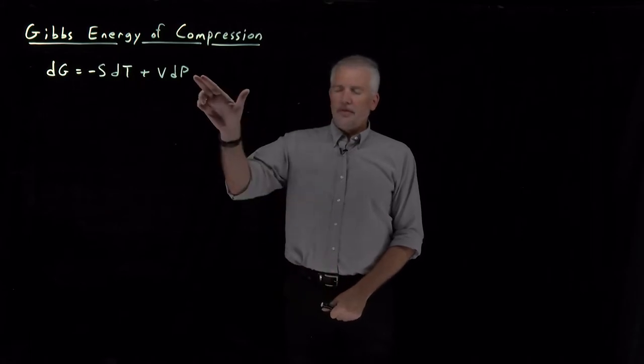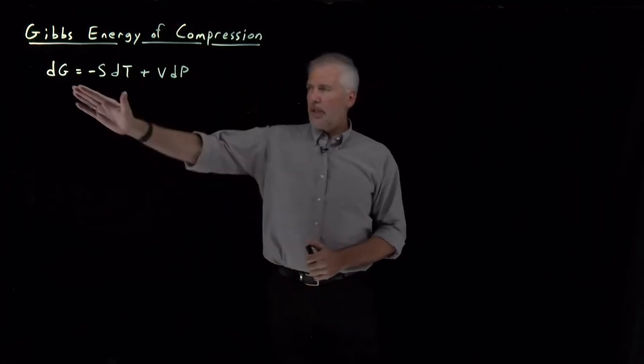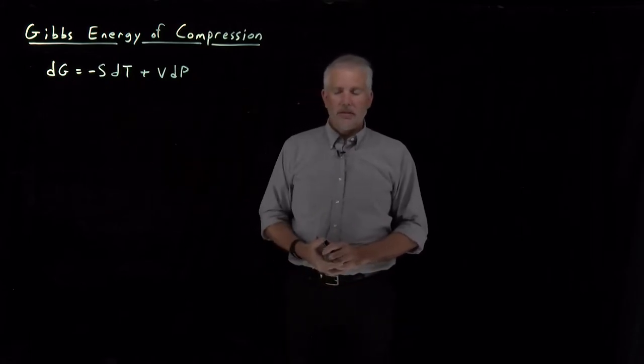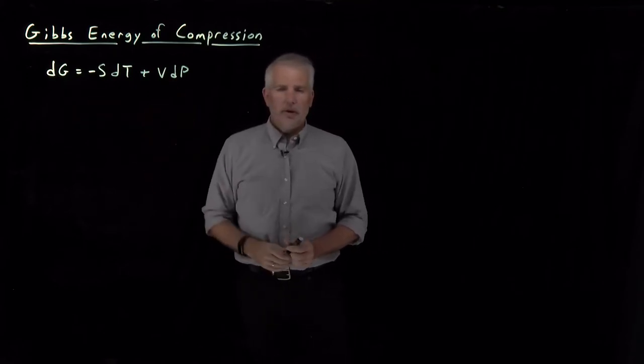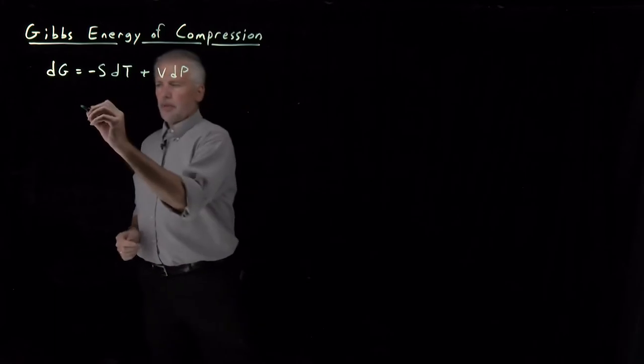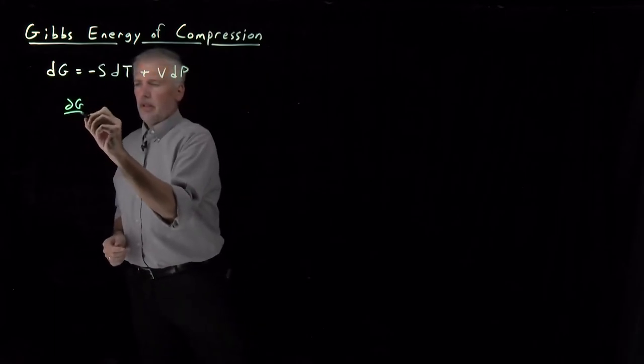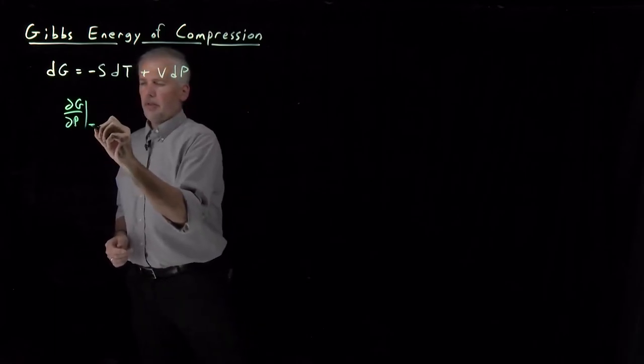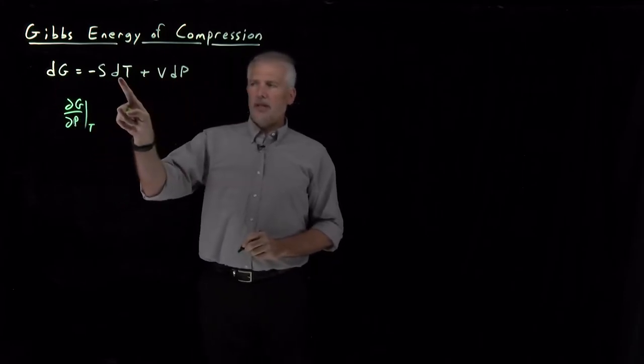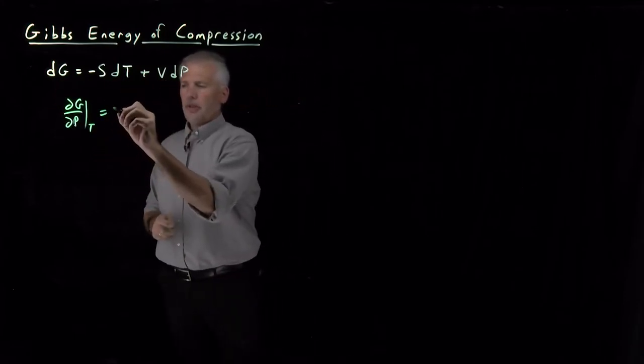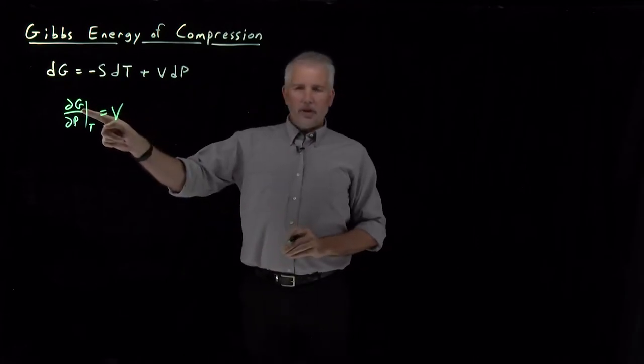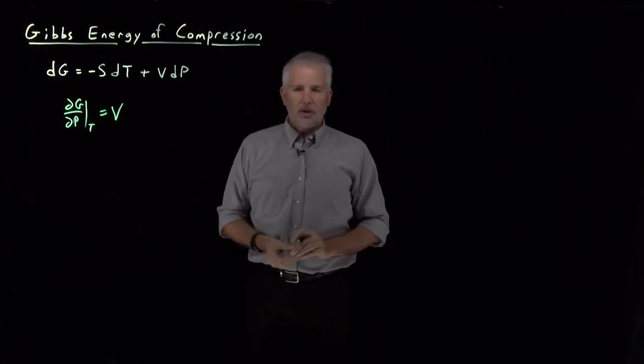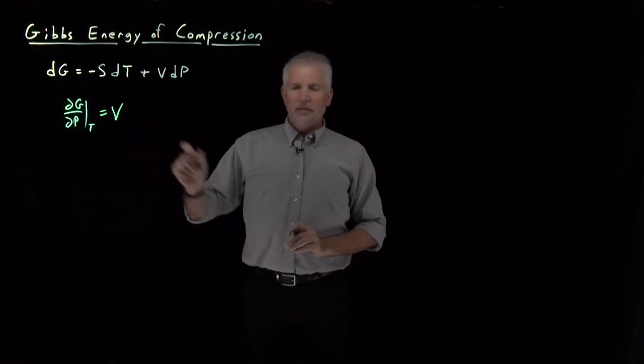One of the nice things about the fundamental equation for the Gibbs energy, or for any of the energies, is that it immediately tells us several of our thermodynamic derivatives. For example, reading directly off of this equation, the derivative of G with respect to P at constant T is going to be this coefficient, V. So we know the rate at which the Gibbs free energy changes when I change the pressure of an object is the volume of the object.